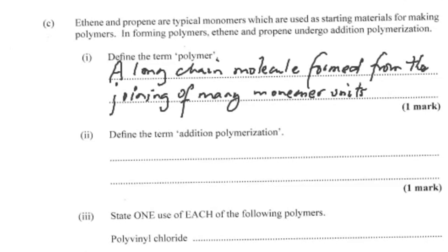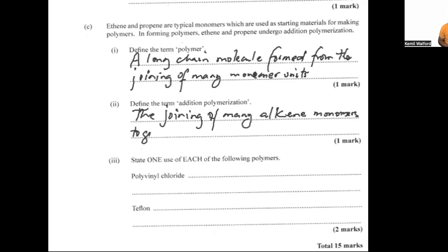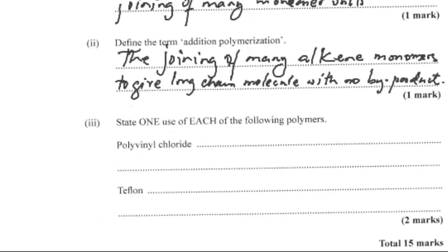A polymer is a long-chain molecule formed from the joining of many monomer units. Addition polymerization is defined as the joining of many alkene monomer units to give a long chain with no byproducts. At the end of addition polymerization, we only get one straight chain — we don't get the elimination of any small molecule.